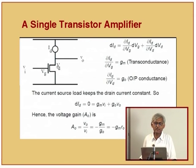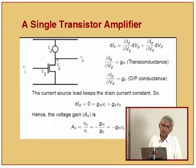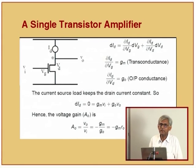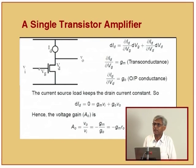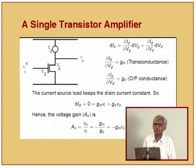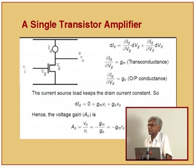To begin with, let us put a single transistor, which is being fed by a current source. Notice this is a small vi and this is a capital VG. For bias we have applied a gate voltage VG, and superimposed on top of that VG is a fluctuation which is small vi.